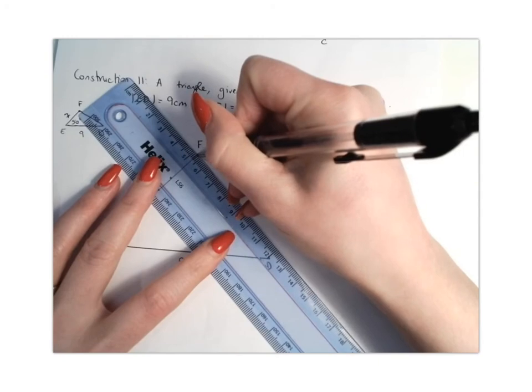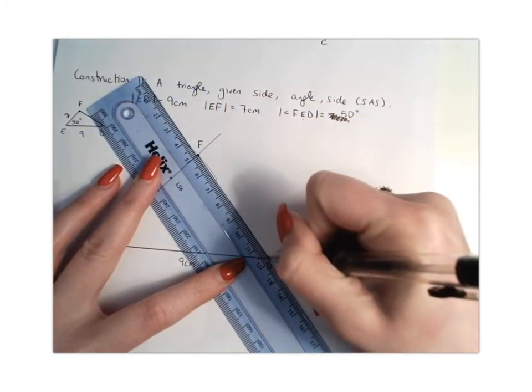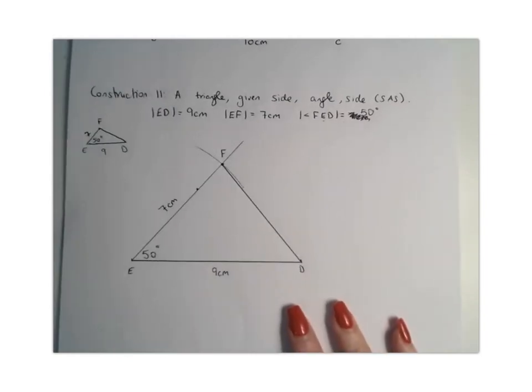And then you're going to join point F down to point D. And that is construction number 11.